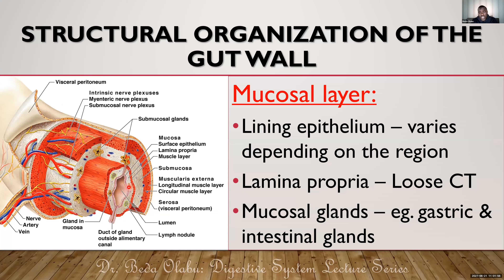Also important: the lamina propria contains several lymphoid aggregations, and the number of lymphoid aggregations varies depending on the part of the GIT. Most of the lymphoid aggregations are in the ileum as well as the appendix, but any part of the GIT mucosa can have lymphoid aggregations.